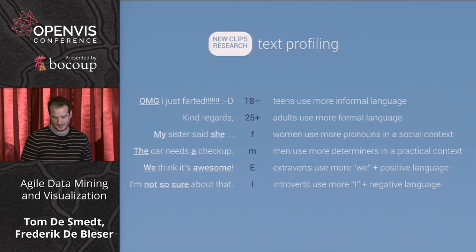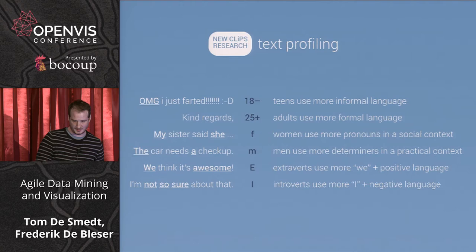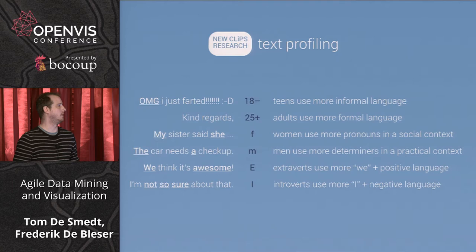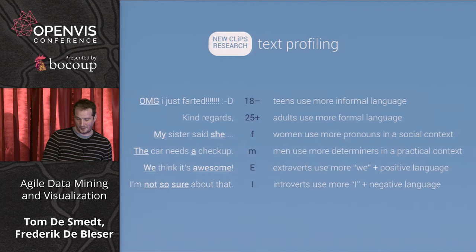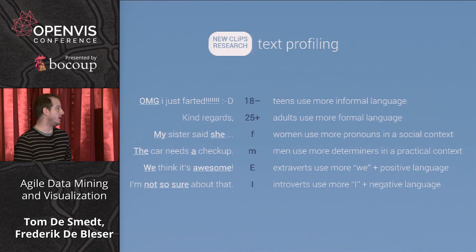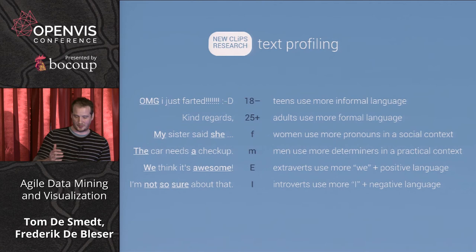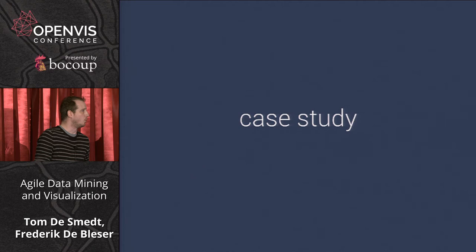Men use more determiners and quantifiers in a practical context — they talk about figures and objects more than women do. People with an extroverted personality will say 'we think it's awesome,' while people with an introverted personality will say 'I'm not so sure.' So it's 'we' versus 'I,' positive language versus negative language. Let's try a simple case study.